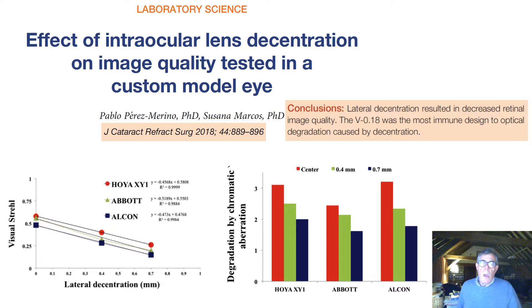But what about the centration of the IOL? We can see this in a study from Pablo Perez-Morino and Susana Marcos, using a custom model eye with three aspheric lenses: the Hoya Vivinex, the Abbot Technis, and the Alcon IQ. You can see that the further degree of decentration — both in the Strehl ratio and also with chromatic aberration — the greater the decrease in the quality of vision.